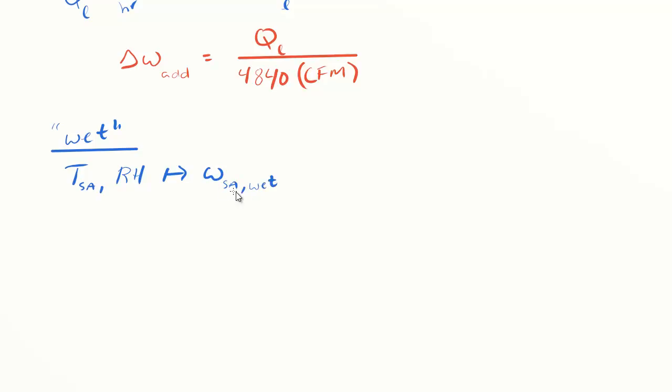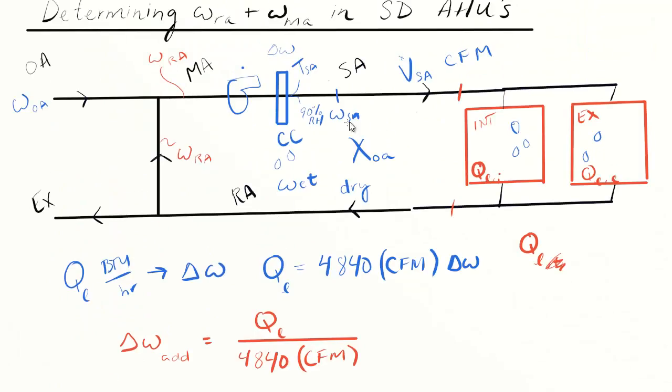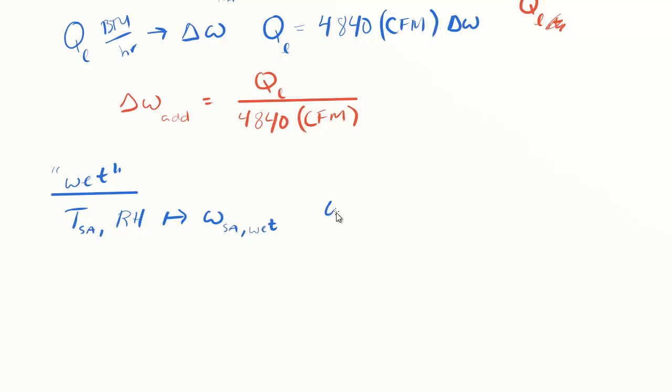I'm going to use omega supply air under the wet condition. If we assume the coil is wet, we automatically have set this humidity ratio. That makes solving for omega return air straightforward. All we have to do is use the omega of the supply air plus that delta omega we added in the space.